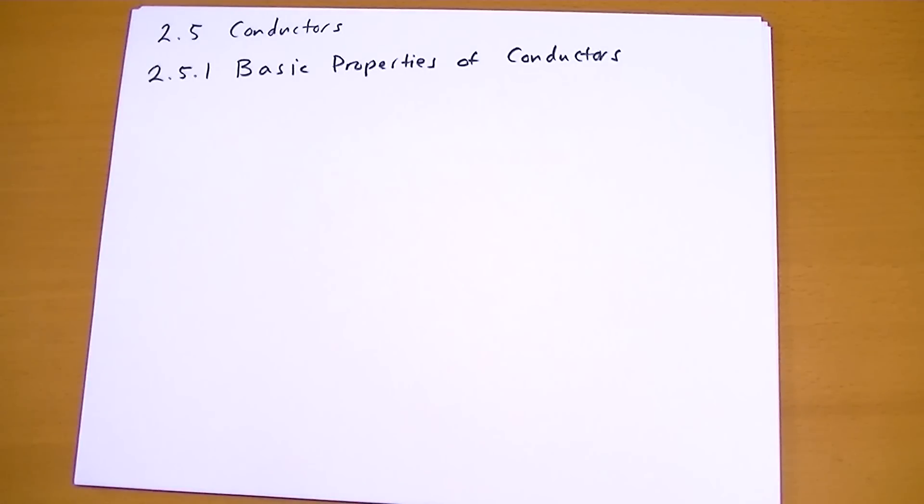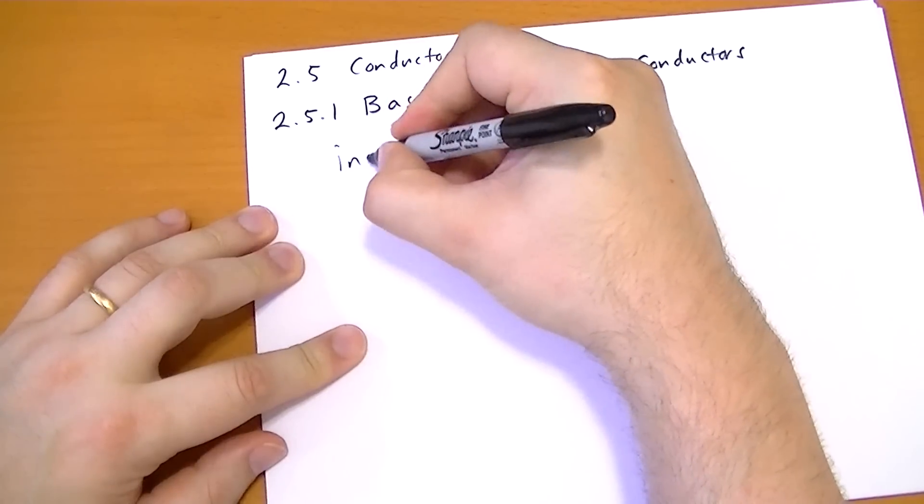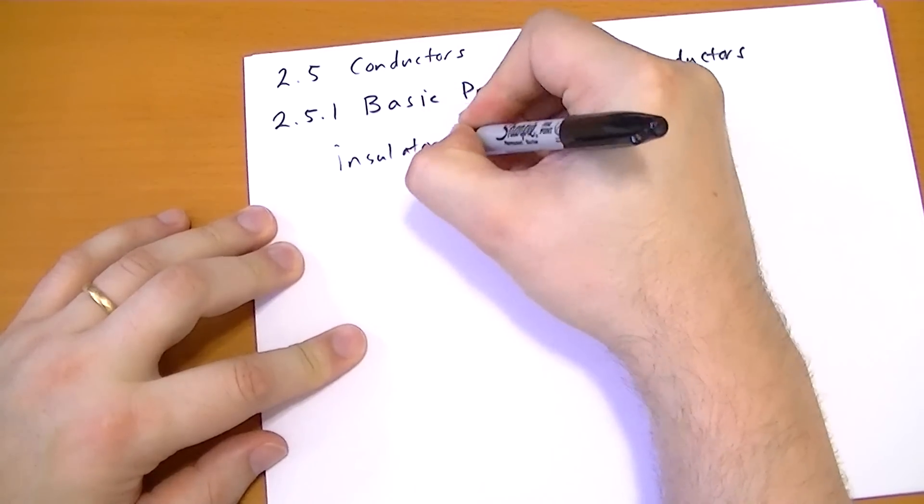So there's basically two types of matter out there when you're thinking of electrostatic fields. There's insulators, and there's conductors.